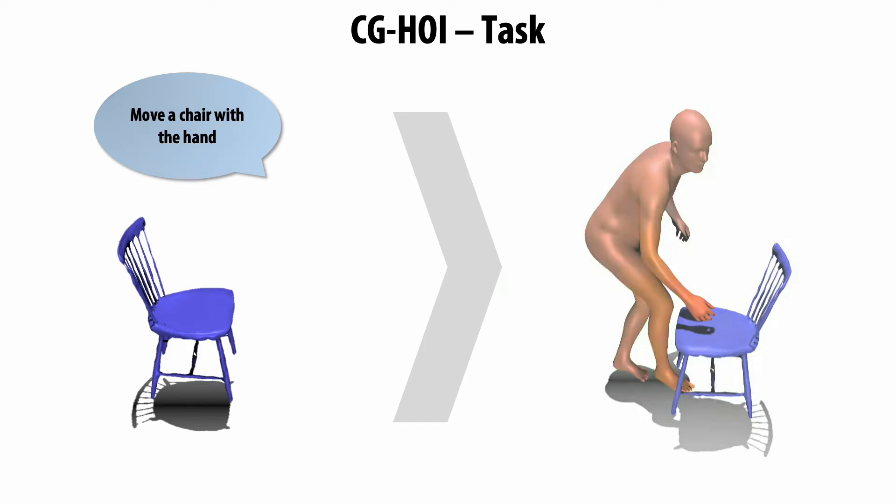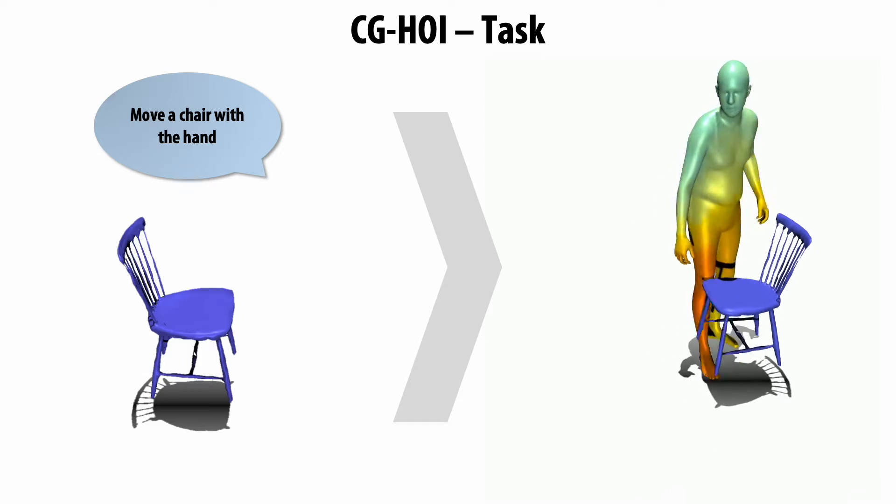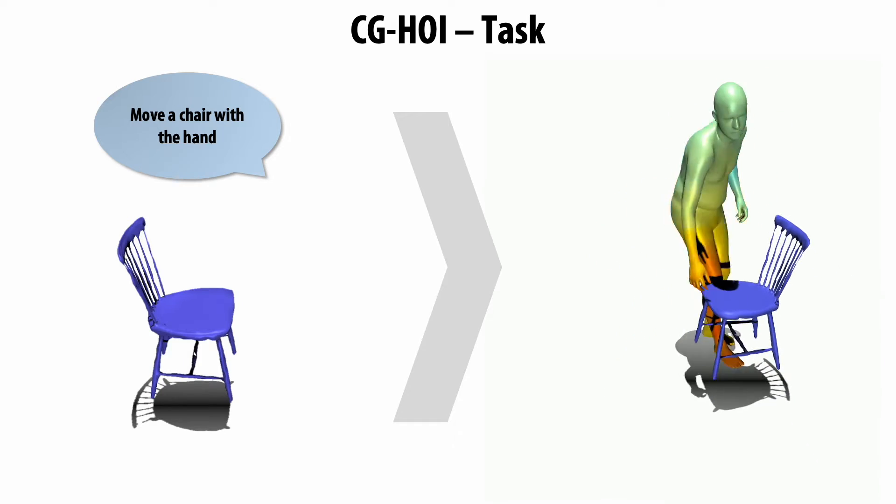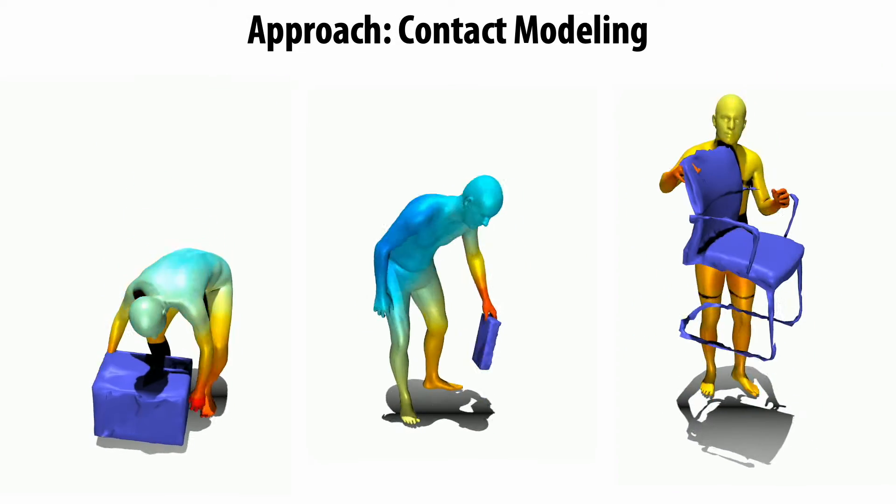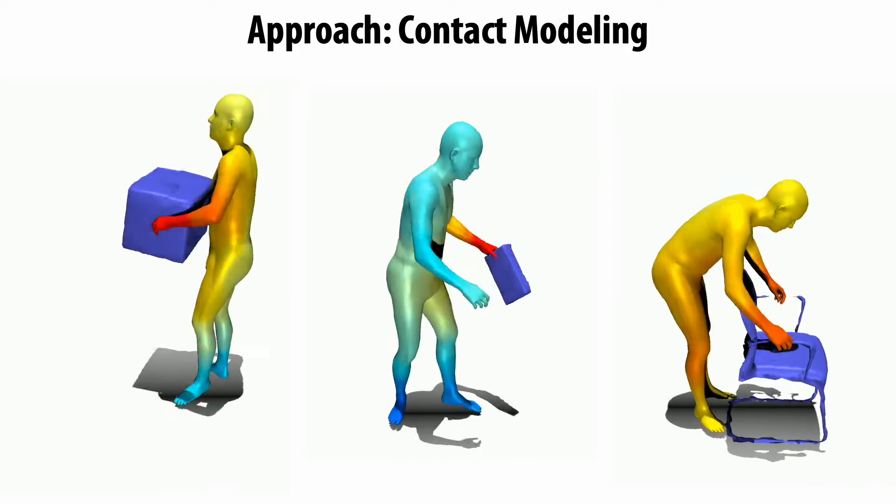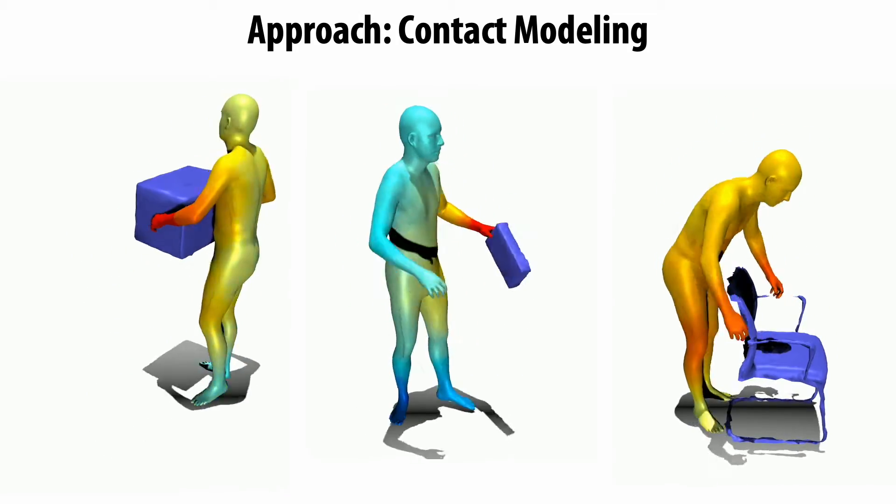We observe that joint modeling of contact is key to generating realistic interactions. We visualize contact as a heat map on the human body surface. Contact highlights how human and object motion correlate with each other.